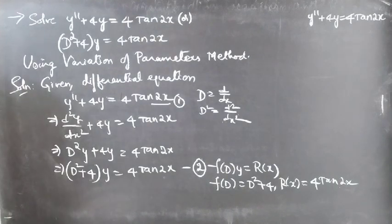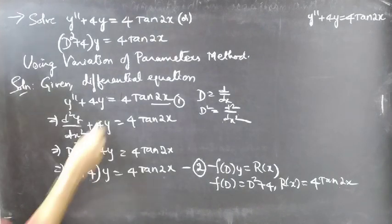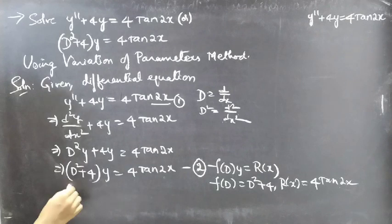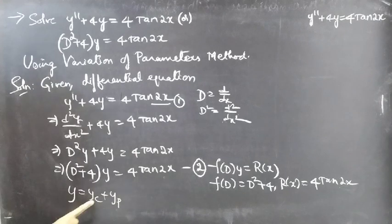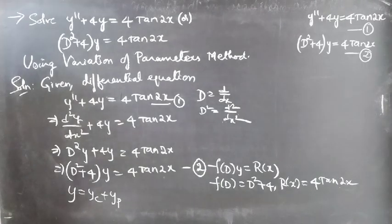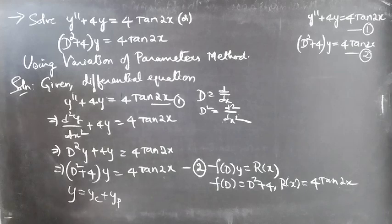We'll find the solution of equation 1 using y = yc + yp, where yc is the complementary function and yp is the particular integral. We'll find yc using the auxiliary equation and later find yp using the variation of parameters formula. The general solution is given by yc + yp. Let's begin with the auxiliary equation to find yc.